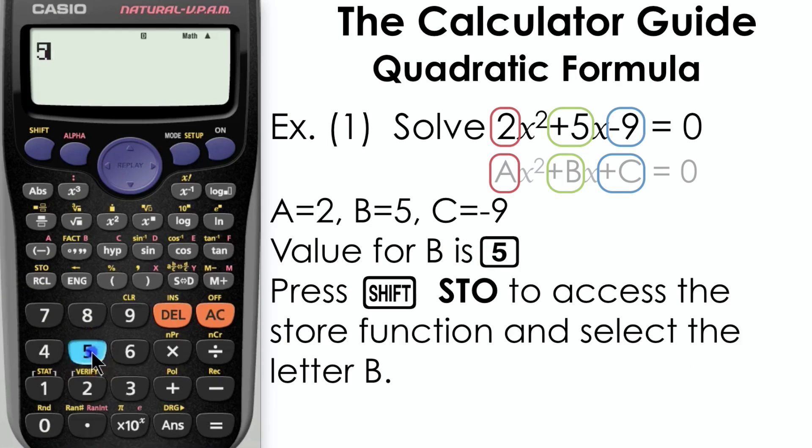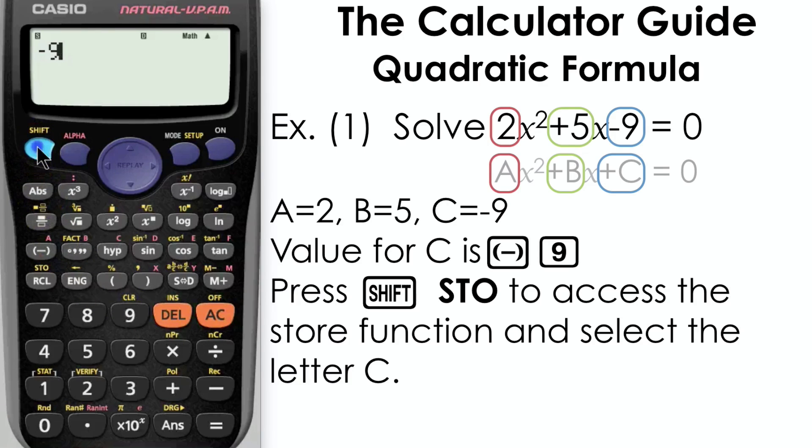Our value for b is 5, so press 5, SHIFT and STO, and then B. Our value for c is -9. We need to be careful with this, what button we use. I would suggest using the negative in brackets here to input the value of -9, SHIFT and STO, and place that in letter C.